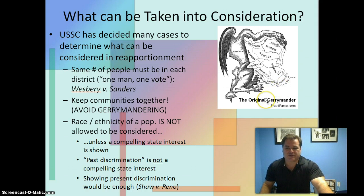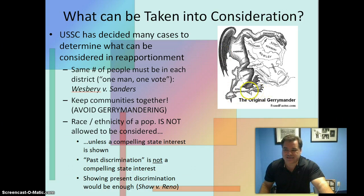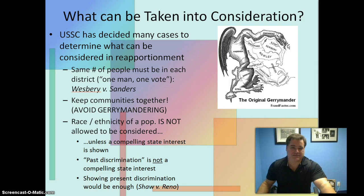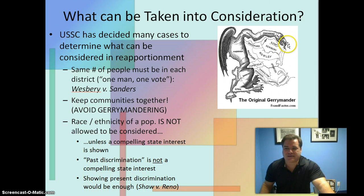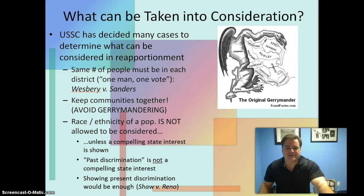This is the original gerrymander. It was drawn on behalf of a man named Eldridge Gerry back around 1790, and this is the state of Massachusetts. His district stretched all the way up the west coast and across the northern counties — a crazy-looking district. They said it looked like a salamander, so they called it a 'gerrymander' after Eldridge Gerry. This idea of trying to avoid gerrymandering has been a persistent problem throughout the centuries.